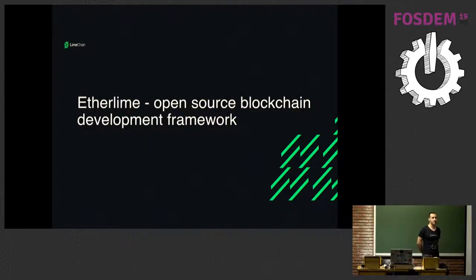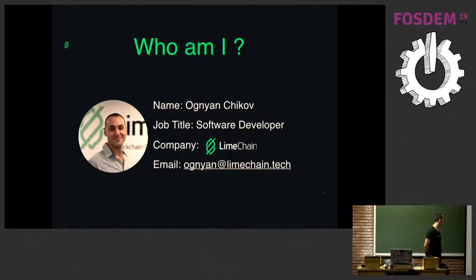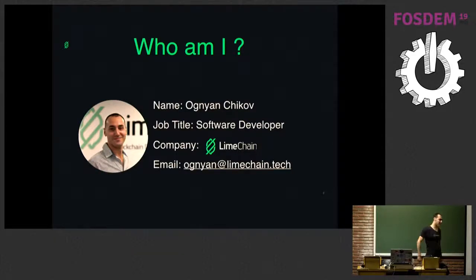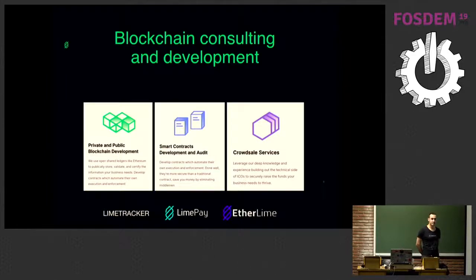But to understand why I'm sitting here in front of you talking about blockchain, let me first introduce myself and our company. My name is Ognjan Chikov and I'm a software developer at LimeChain. LimeChain is located in Bulgaria. We are a blockchain consulting and development company and we provide services for private and public blockchain development, smart contracts development and audit, crowd sales services, and more.